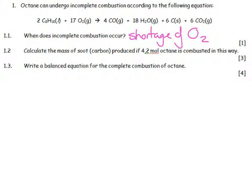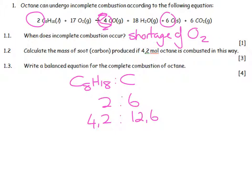Calculate the mass of carbon produced if 4.2 moles of octane is combusted in this way. Octane C8H18 is to carbon as 2 is to 6. So 4.2 is to 12.6 divided by 2 times by 3. Mass equals number of moles times molar mass of carbon, 12.6 times by 12, and I'll end up with 151.2 grams.